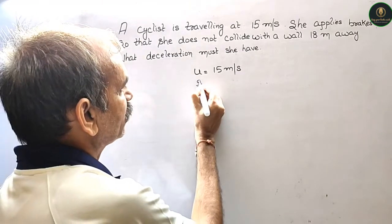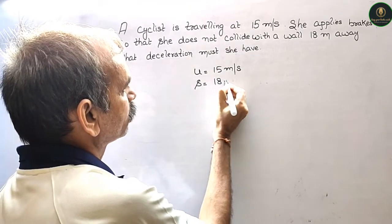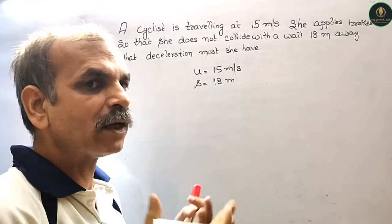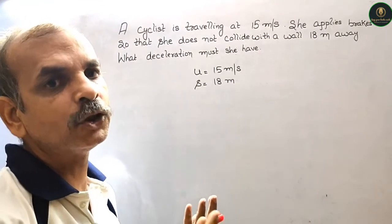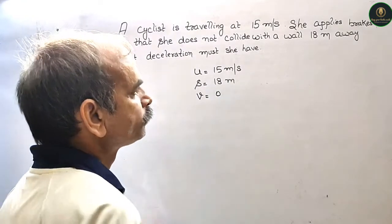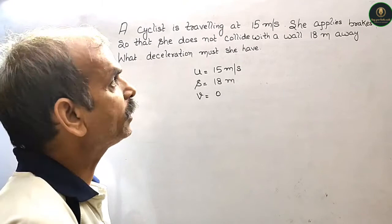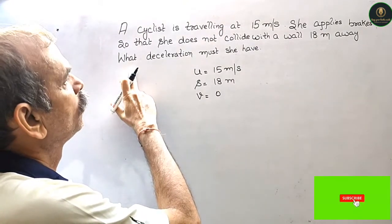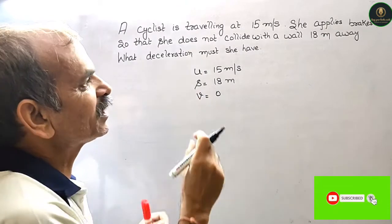So S is 18 meters. So if collide not to do so, final velocity will be zero. We will know V is equal to zero. Now what deceleration must she have.